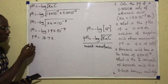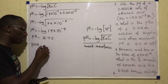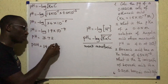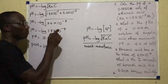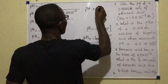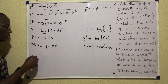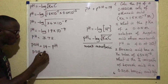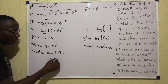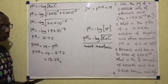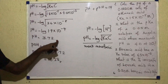If the question had asked for pOH, from the previous video we said that pOH equals 14 minus pH, and pH equals 14 minus pOH, because pH plus pOH equals 14. So pOH in this case would be 14 minus 3.72, which gives 10.28. But since we weren't asked for pOH, the solution ends at pH = 3.72.